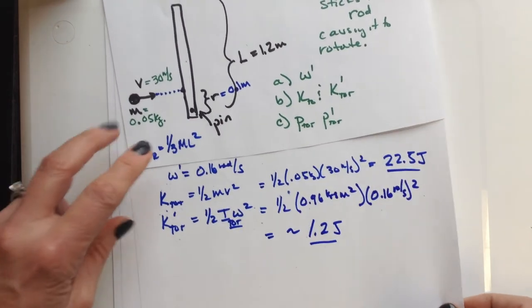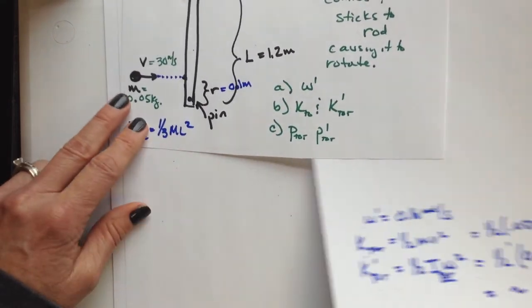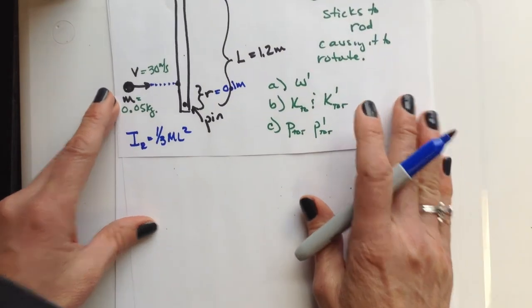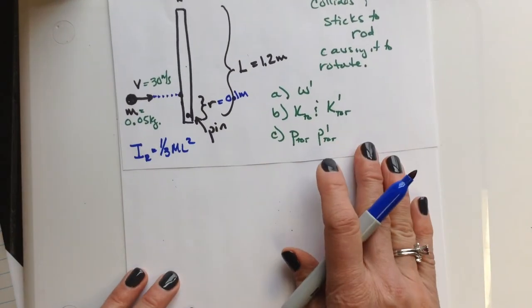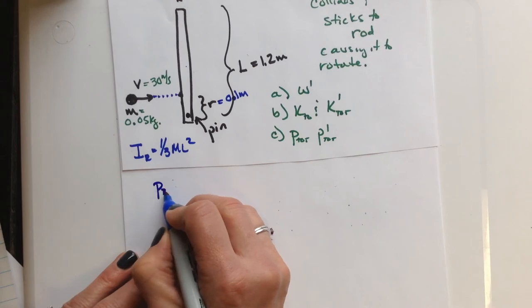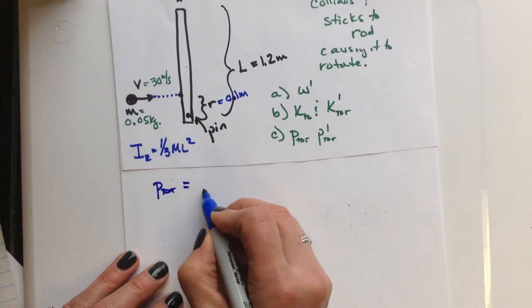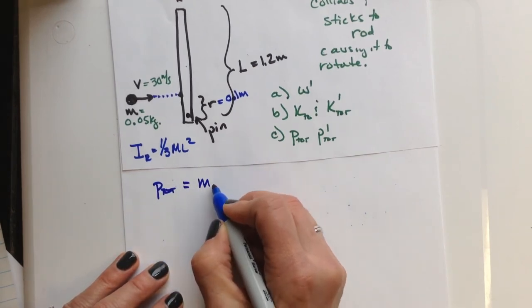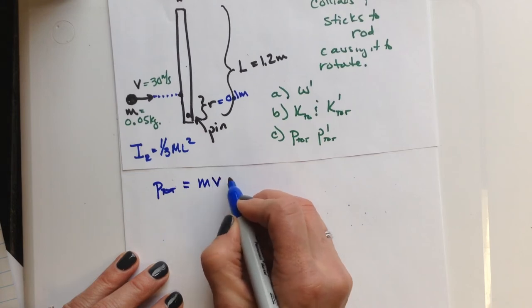Now what is kind of surprising is what happens with the linear momentum. So we want to solve for the total momentum before and the total linear momentum afterwards. Well, the total before is pretty straightforward, that's just going to be the mass of the point, the point mass of the particle, times v,